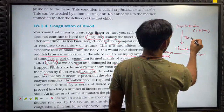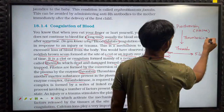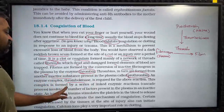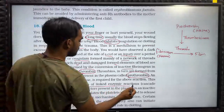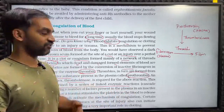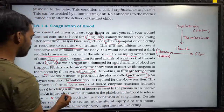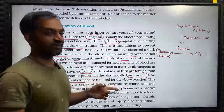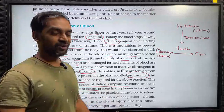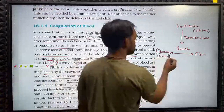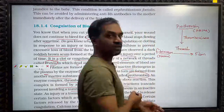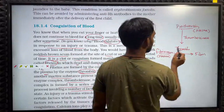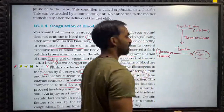In the reaction, prothrombin is converted to thrombin. This is formed by a series of linked enzymatic reactions — a cascade process involving a number of factors present in the plasma in an inactive state. So plasma has fibrinogen and prothrombin in inactive state. When you cut open and bleed, thrombokinase is activated, then thrombin is activated, and thrombin activates fibrinogen into fibrin.